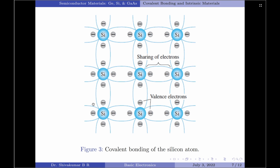Let us now look at the covalent bonding diagrams for these semiconductors. Figure 3 here indicates the covalent bonding for the silicon atom. Please note that the germanium atom will also have an identical structure. We have previously learned that both silicon and germanium have 4 valence electrons. These 4 valence electrons of one atom form a bonding arrangement with 4 adjoining atoms. This bonding of atoms done by sharing electrons is called covalent bonding.